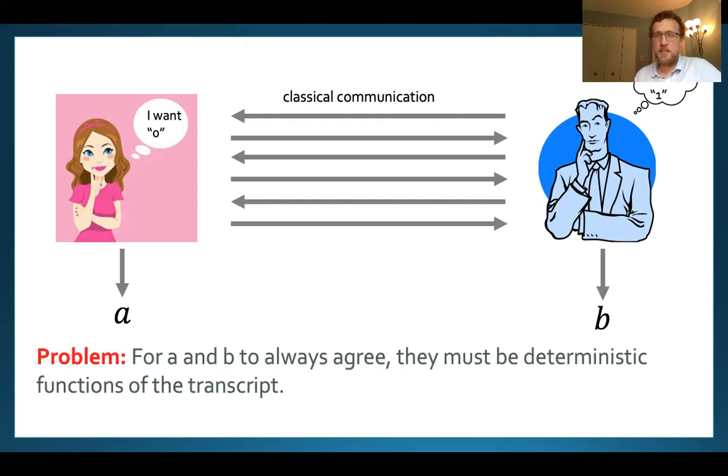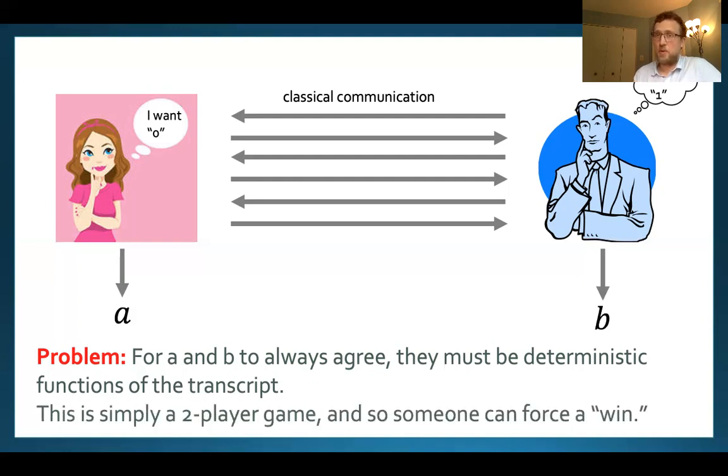With a short argument you can convince yourself that this is actually not possible and here's the reasoning. Basically the only way to ensure that the bits a and b are going to agree at the end of the protocol is if they are deterministic functions of the transcript of communication. And unfortunately that means we are essentially in a setting of a competitive two-player game. If we consider Alice to have won when the outcome is zero and Bob to have won when the outcome is one then essentially they're competing and they're playing a deterministic two-player game and therefore a winning strategy exists. That means one or the other of them has a strategy that will allow them to force the desired outcome with probability one.